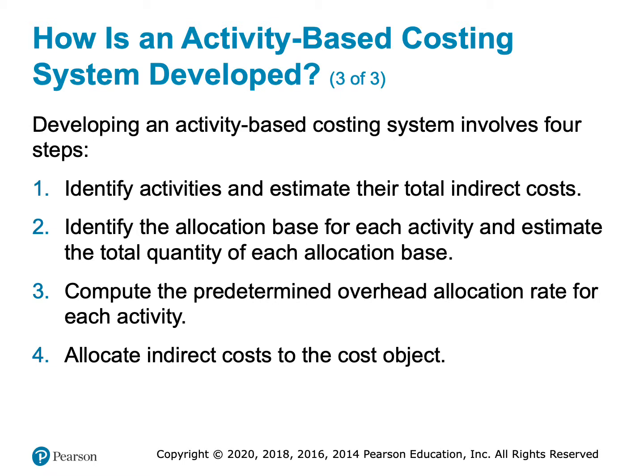To develop an activity-based costing system, first we have to identify all of the activities that use overhead costs — indirect costs — and then estimate out of the total overhead how much each activity uses. Then we're going to identify an allocation base, which is the same as the cost driver we talked about when we discussed predetermined overhead rates back in Chapters 2 and 3. Although we get more creative than just using direct labor hours, machine hours, or direct labor dollars — we may still use those, but we may use many others instead.